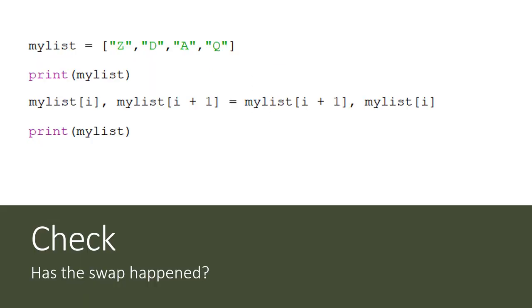So here we are. This is just to check that your program works. I've created a list that goes Z, D, A, Q, but obviously your list can be anything. Print it out. Swap the first two elements in the list using tuple substitution and print out the list again.